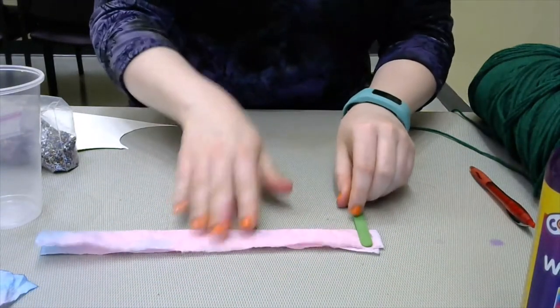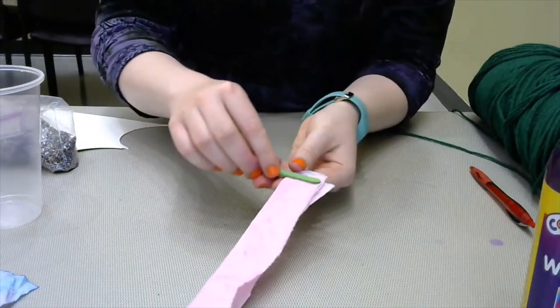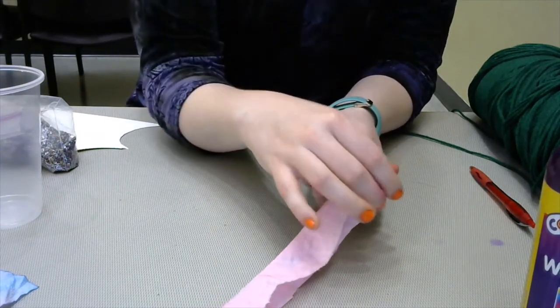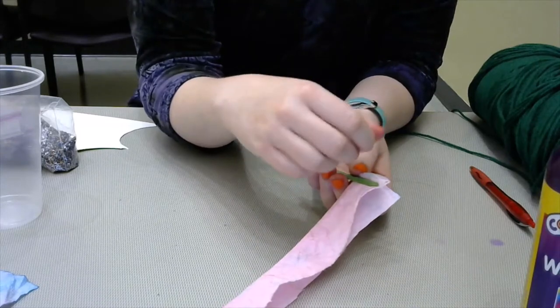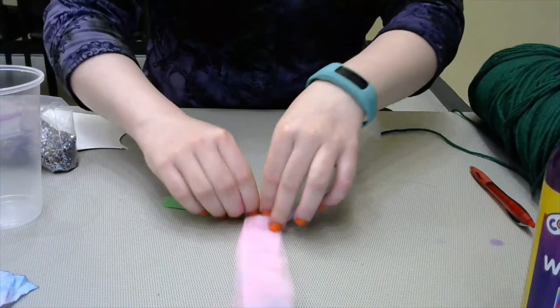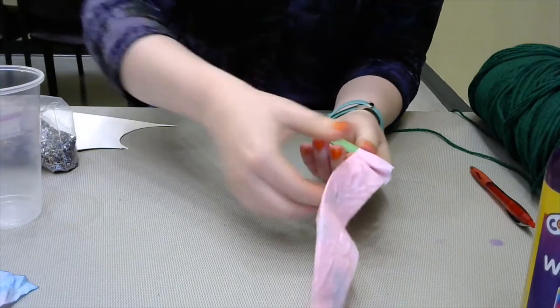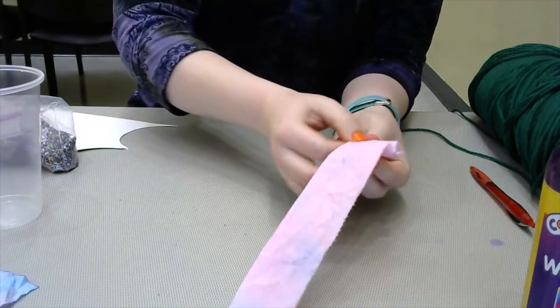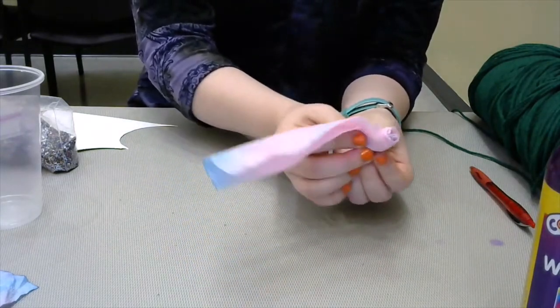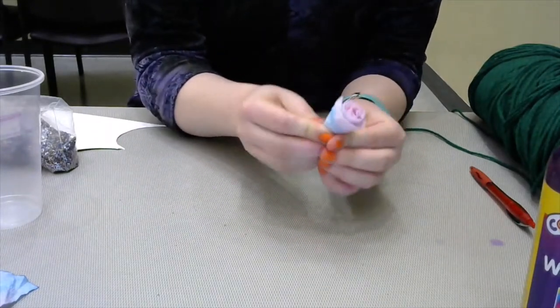So once you have it glued at one end we're going to start rolling it down the line. Now the trick is you want it sort of pinched and tight at the bottom here but sort of looser at the top because the top is going to be where your petals are and we want it looser so we can sort of fluff it up. So you just start rolling kind of making sure you pinch the bottom here really tight and you keep going until you reach the end.